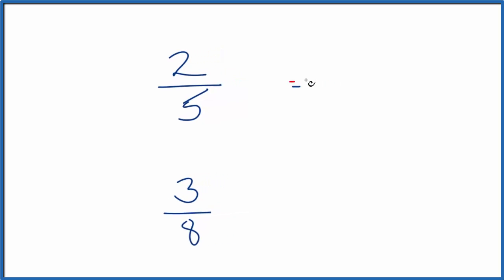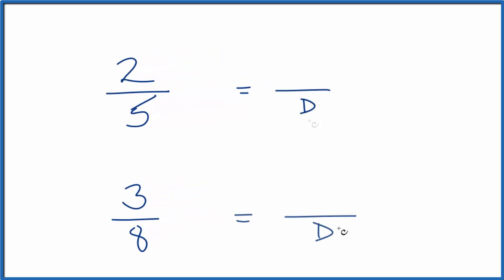First, we could find a common denominator. So if we can get the number underneath to be the same, then we could compare the numerators. And which numerator is bigger, that would tell us which fraction is larger, 2 fifths or 3 eighths. Let's do that first.